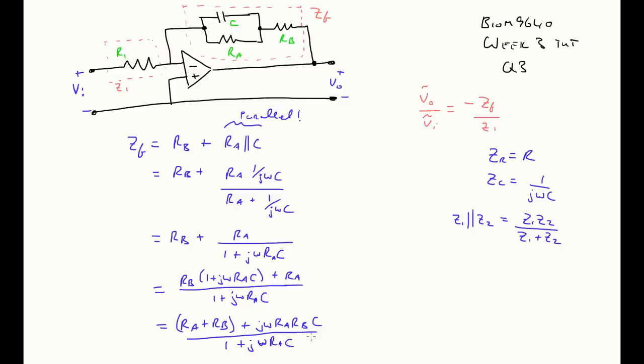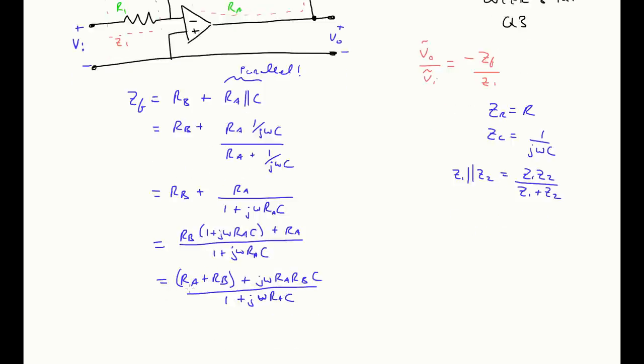So, it's going to be RB into 1 plus j omega RA C plus RA, which equals RA plus RB plus j omega RA RB C, all over 1 plus j omega RA C. Okay, I know this is messy, but if you look what we have, it's not all that bad. We have a real number, a complex number on top, a real number, a complex number. So, it's ratio of complex numbers, and that's pretty easy to work with from this point forward. Let's put in the values. So, in the question, let's write these down. We were given the values that RA was equal to 20 kilo ohms, RB was equal to 5 kilo ohms, C was equal to 0.05 microfarads by 10 to the minus 6, and the last resistor, R1, was equal to 5 kilo ohms.